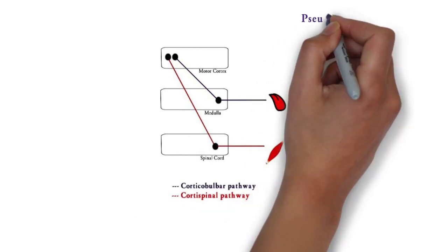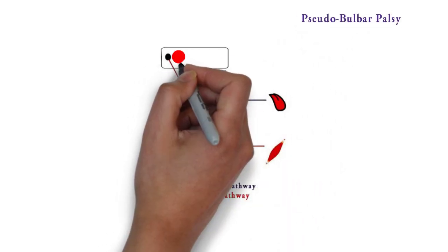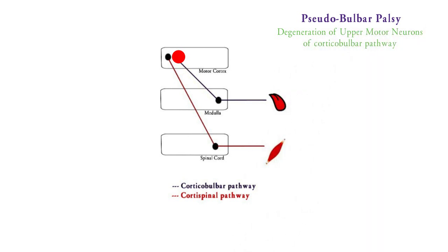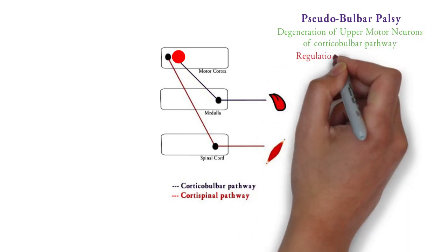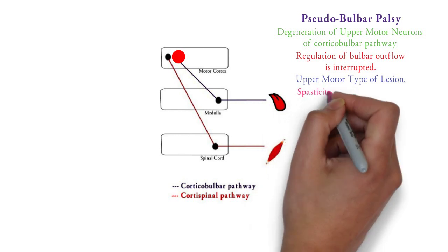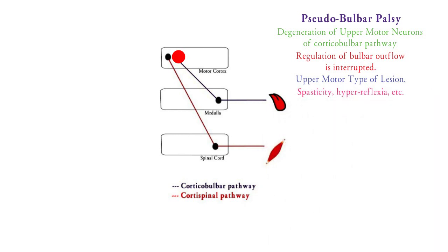First is pseudobulbar palsy. In pseudobulbar palsy, there is degeneration of upper motor neurons of the corticobulbar pathway. As upper motor neurons degenerate, regulation of bulbar outflow is interrupted. So the lower motor neurons of the lower cranial nerves are intact but without being controlled by upper motor neurons. This is an upper motor neuron type of lesion, and therefore the clinical features will be spasticity, hyperreflexia, etc., seen in muscles supplied by bulbar cranial nerves like the tongue.